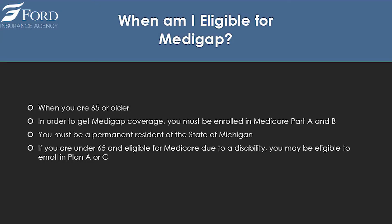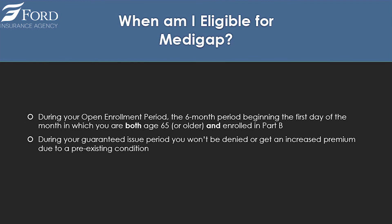When are you eligible for Medigap? You must be 65 or older and enrolled in Medicare A and B — meaning you still pay that Part B premium. You must be a permanent resident of Michigan. If you are under 65 and eligible for Medicare due to a disability, you may be eligible to enroll in Medigap Plan A or C. Your open enrollment period is the six-month period beginning the first day of the month in which you are both age 65 or older and enrolled in Medicare Part B. During your guaranteed issue period, you won't be denied or charged an increased premium due to pre-existing conditions.